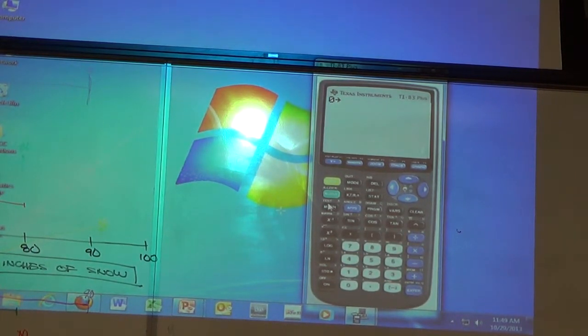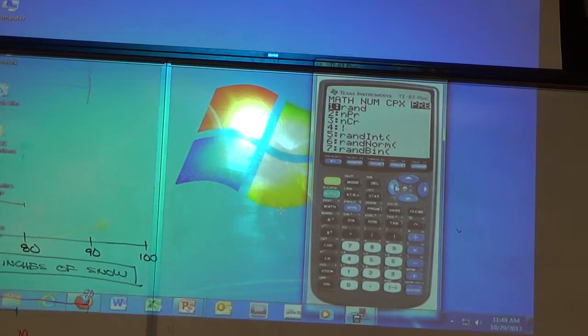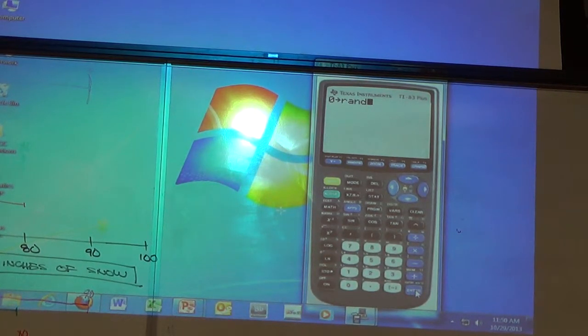And then go into that math menu, over to PRB, and then number one. This should sound familiar. You just did it with that randomization in your quiz, right? Then press enter.